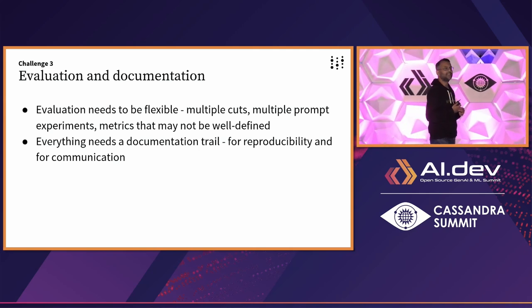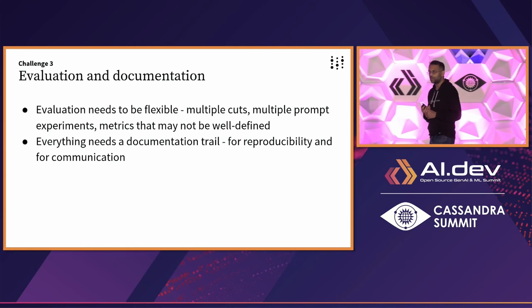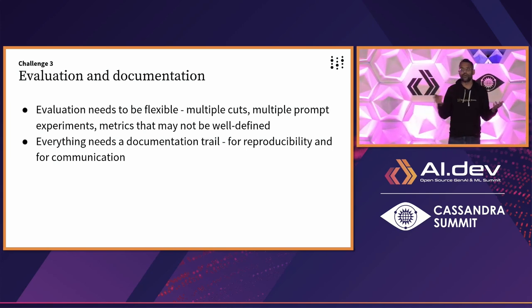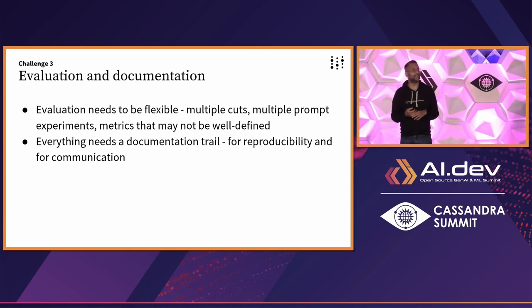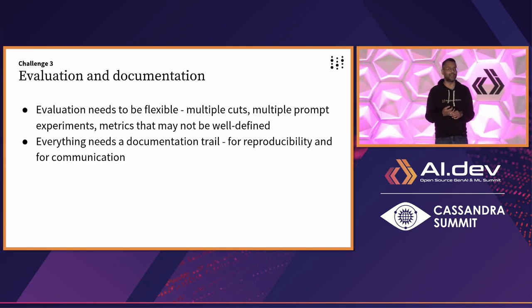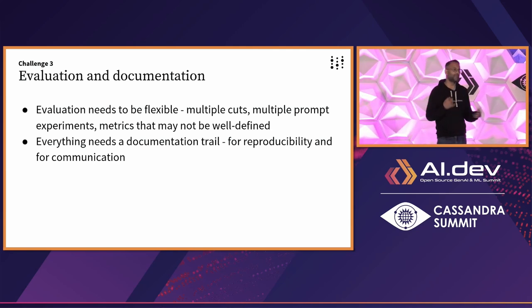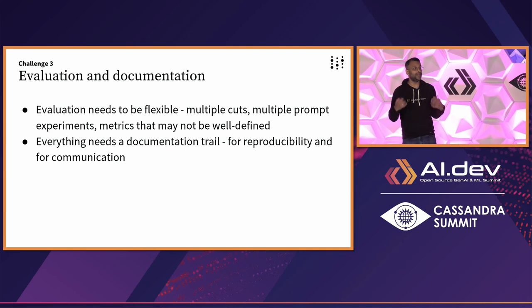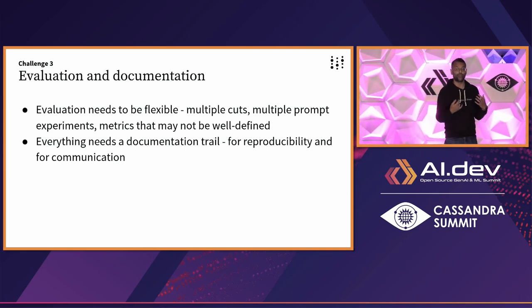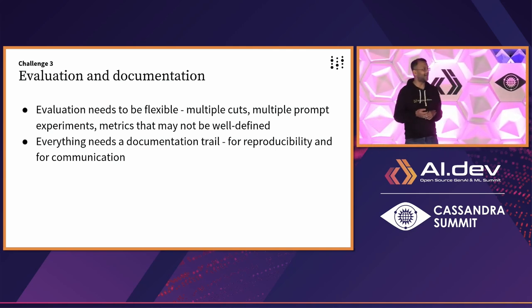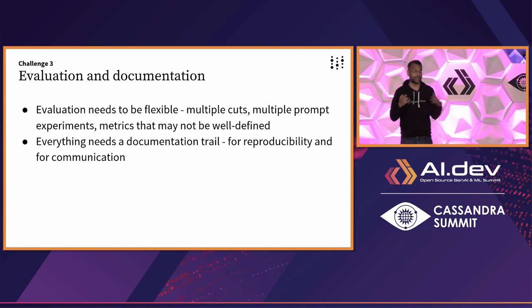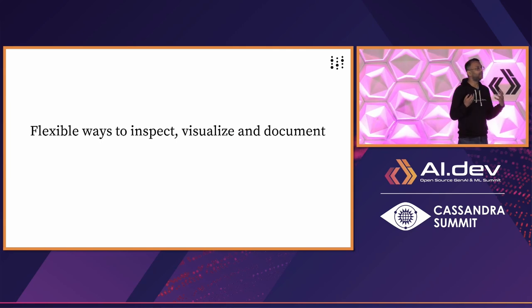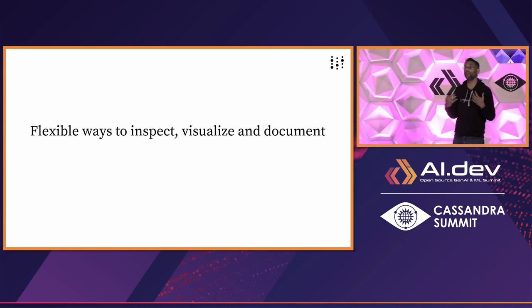Another dimension of the evaluation challenge is that there is no clear right answer. With a tabular dataset model, you know you need to maximize AUC or minimize log loss — very clear. But there is no standard metric for capturing hallucination. There is no standard metric for capturing toxicity. These are still growing research areas. So you have to be constantly flexible and try different approaches to guard against real problems. For governance, you need to document everything in one place to communicate not just with fellow developers, but with other organizational stakeholders and potentially regulatory bodies — requiring a platform that can inspect, debug, visualize, and document.